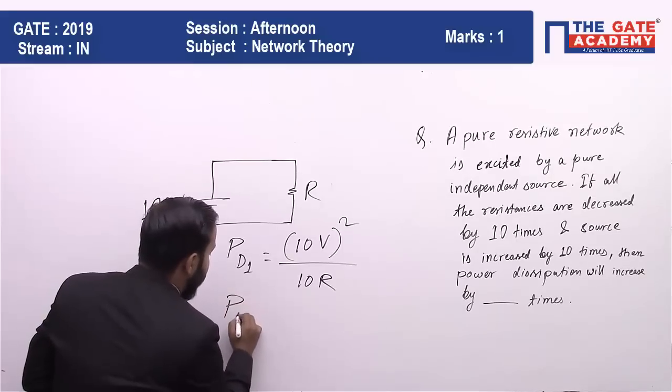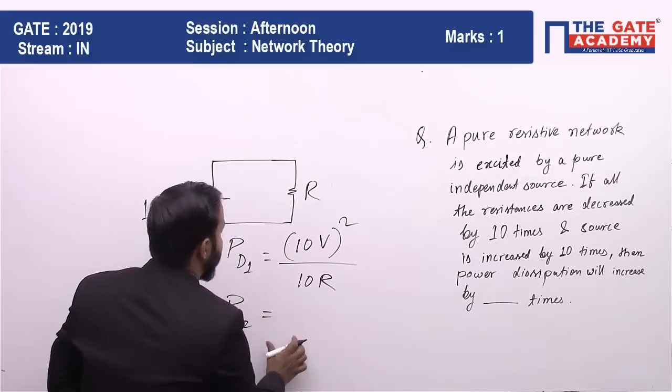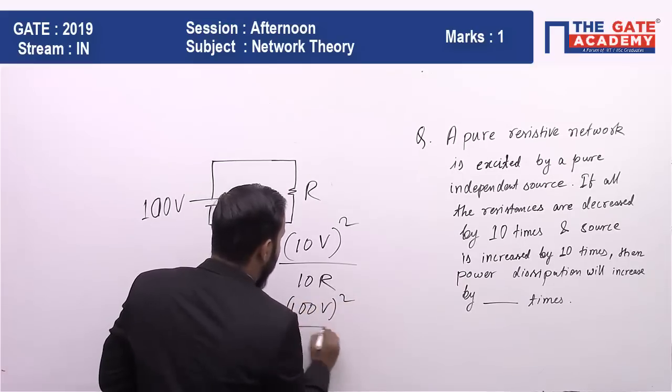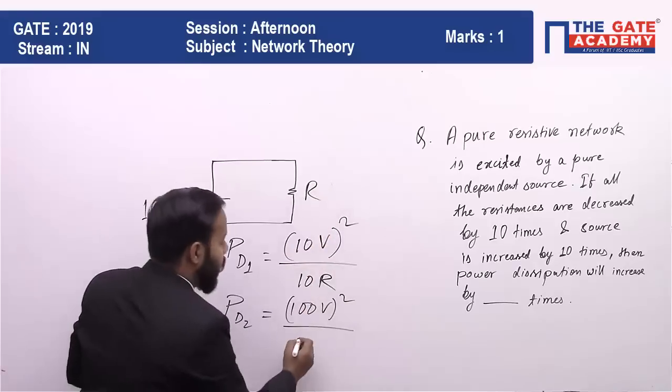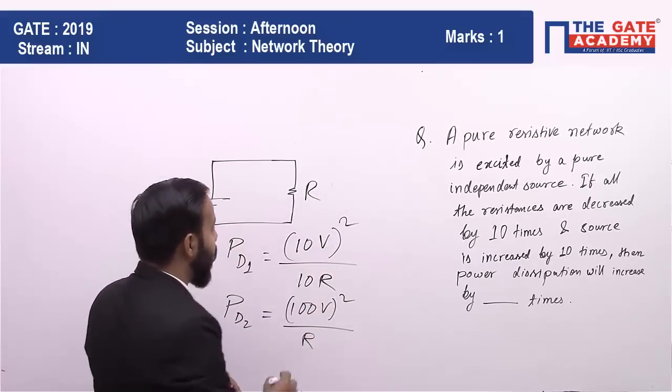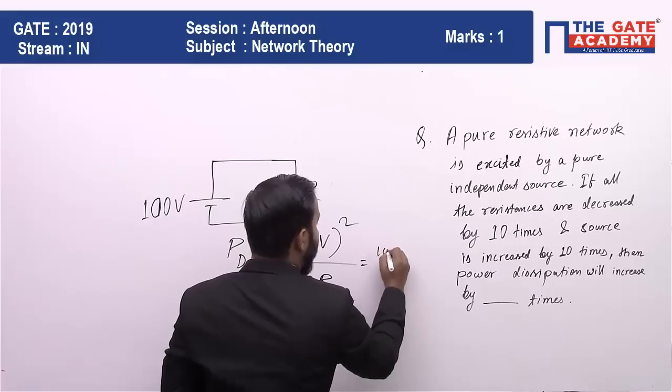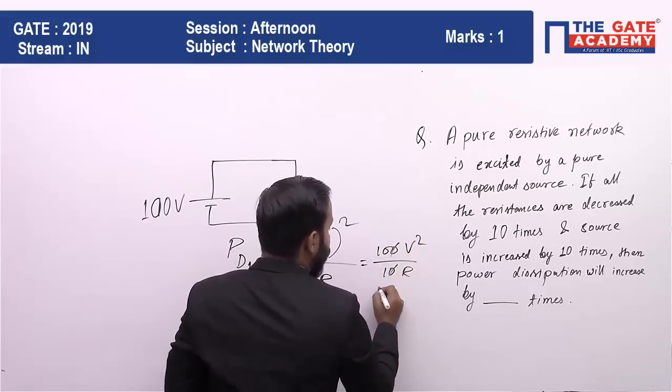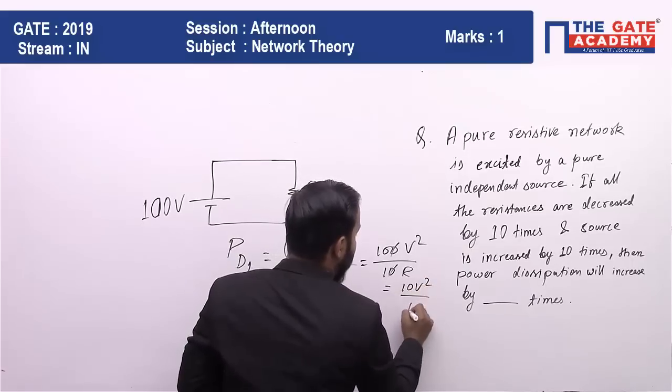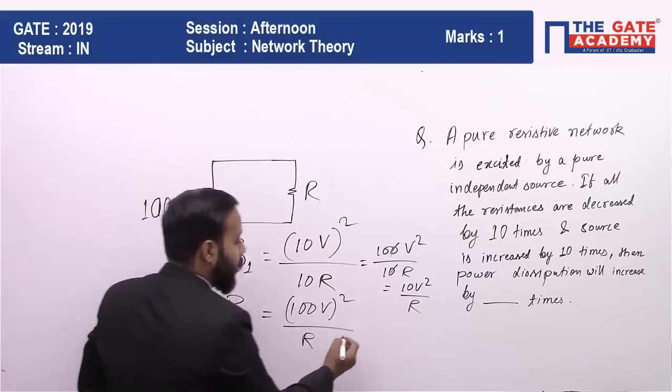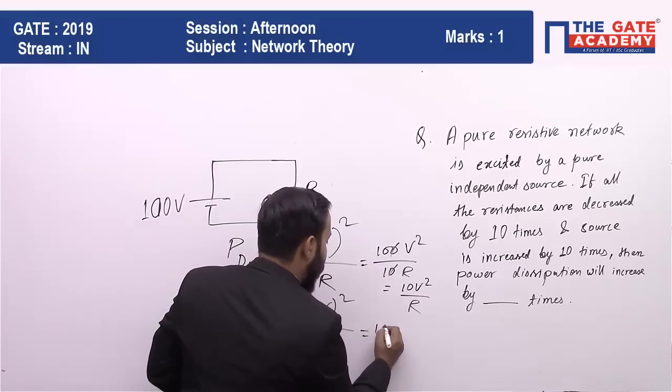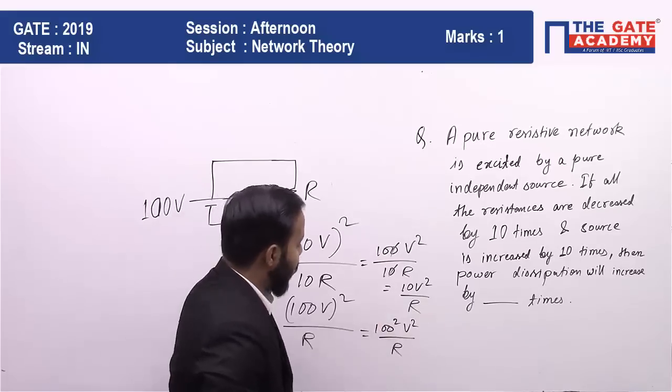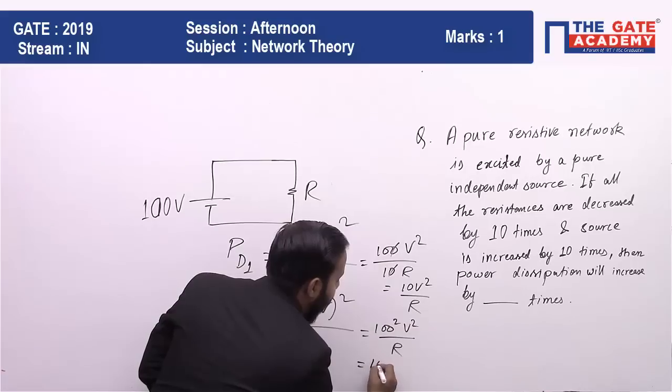P_D2 becomes (100V)² divided by R. We can write this as (100V²)/(10R), which becomes 10V²/R. This equals (100V²)/R, and 100V² becomes 1000 times (10V²/R).